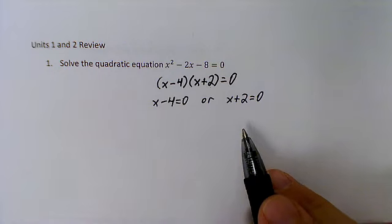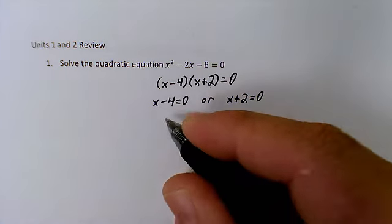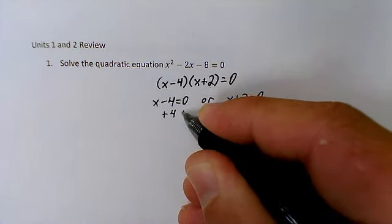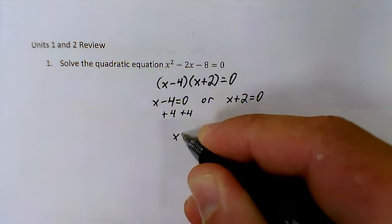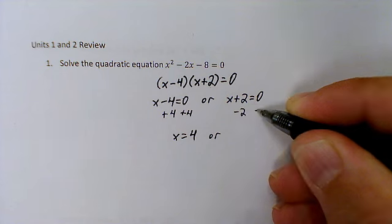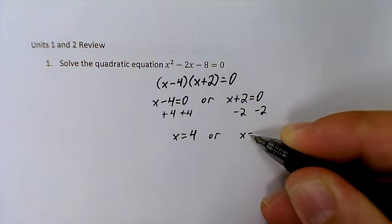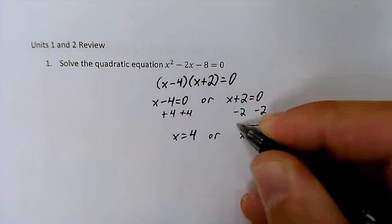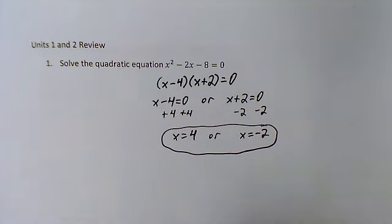So x - 4 should equal 0 or x + 2 will equal 0, and that's by the zero product property. On this linear equation now I'm just going to add 4 to get x equal to 4, or my other answer is going to come from subtracting 2: x is equal to -2.